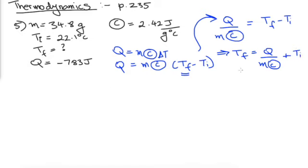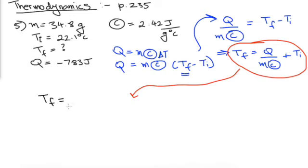So we're going to use this, and we're going to sub in whatever we want to sub in to this equation. So right here, I'm going to do the calculations. So Tf is equal to Q, which is negative 783 joules, over m, which is 34.8 grams, into c, which is 2.42 joules.